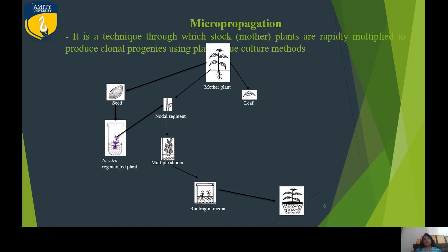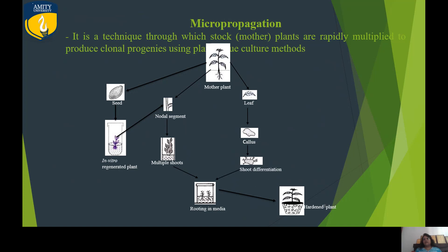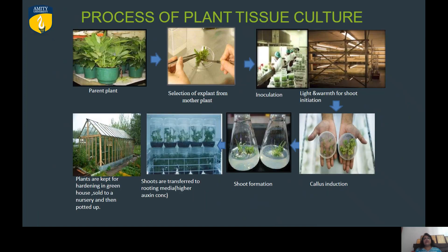Through indirect organogenesis, we go for callus production, then multiple shoot proliferation, then move through different media, and ultimately get hardened plants ready to go into the field. These plants are hardened to acclimatize to natural conditions, making them suitable for field planting.